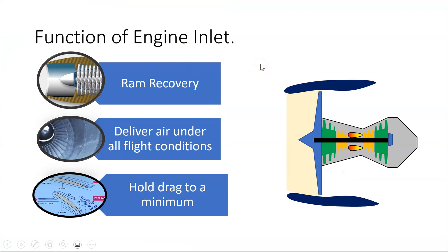So the function of an engine inlet is threefold. One, it is to recover the ram pressure. The second is to deliver air to the engine under all flight conditions. And the third one is to hold drag to a minimum.